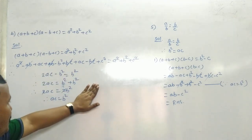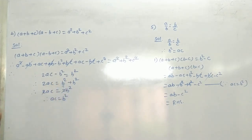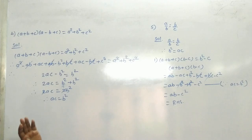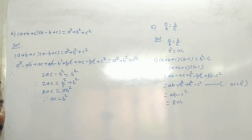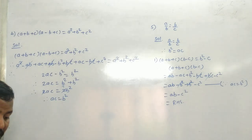2AC minus B square is equal to B square. अब यह B square यहाँ पर plus हो जाएगा। So 2AC is equal to B square plus B square, यानी 2AC is equal to 2 times B square. 2 और 2 cancel. Then AC is equal to B square. And B square is equal to AC. It's proved! यही हम लोगों को proof करना था।